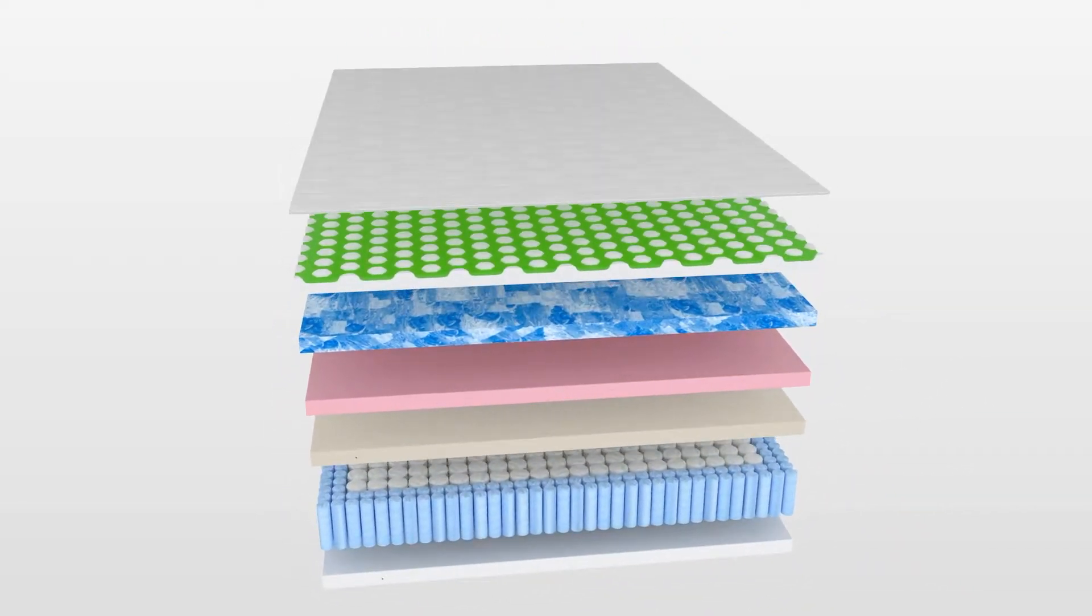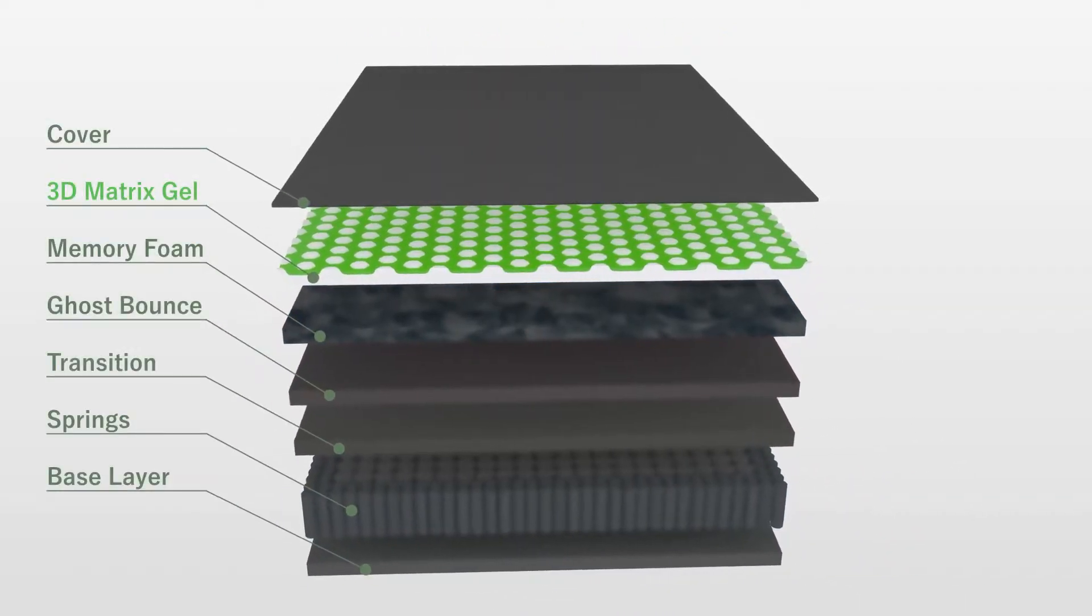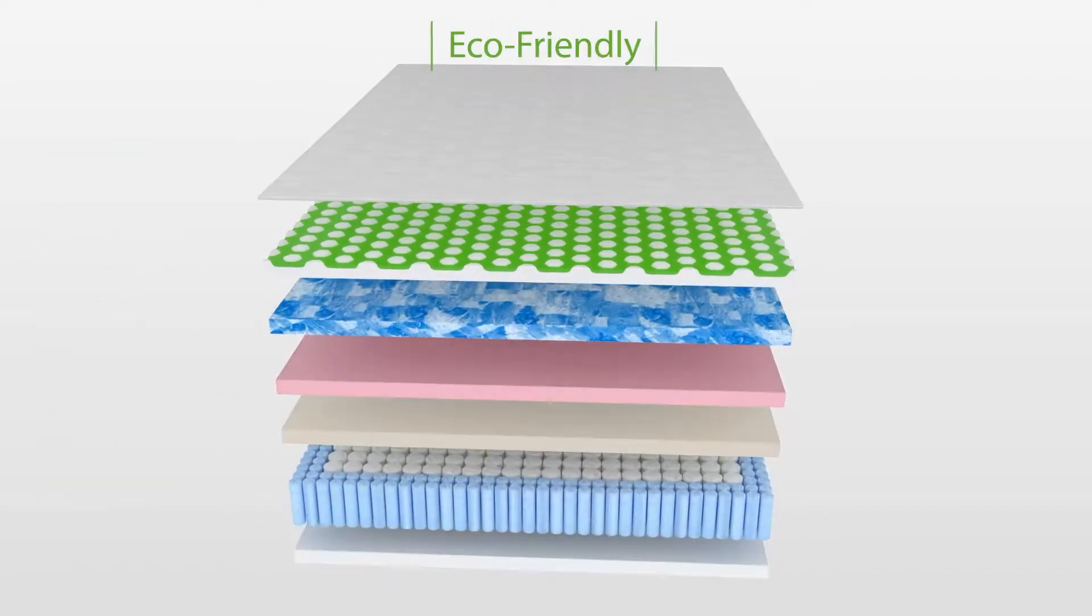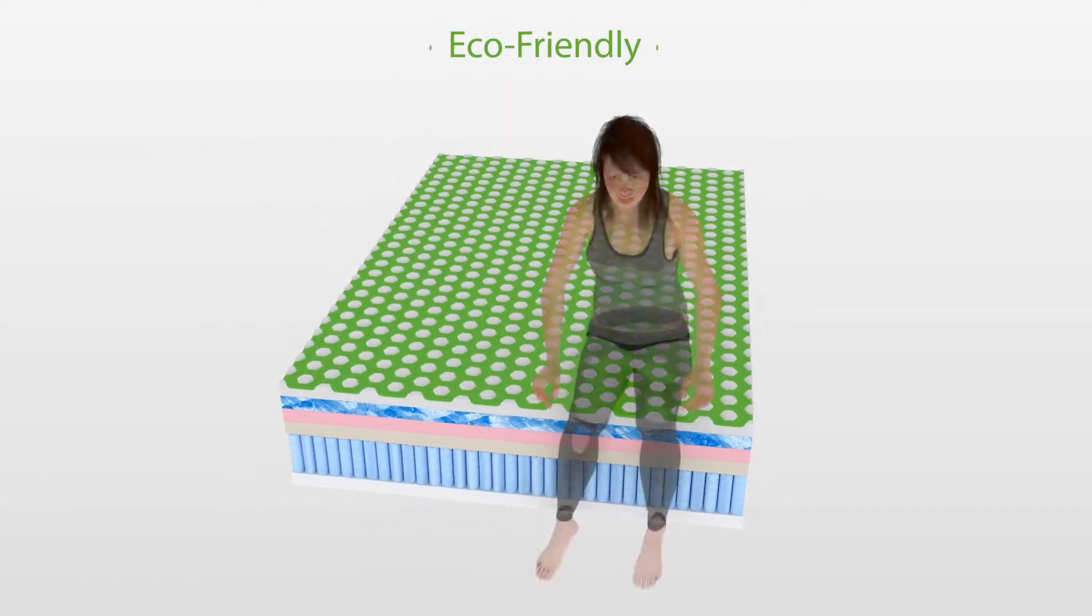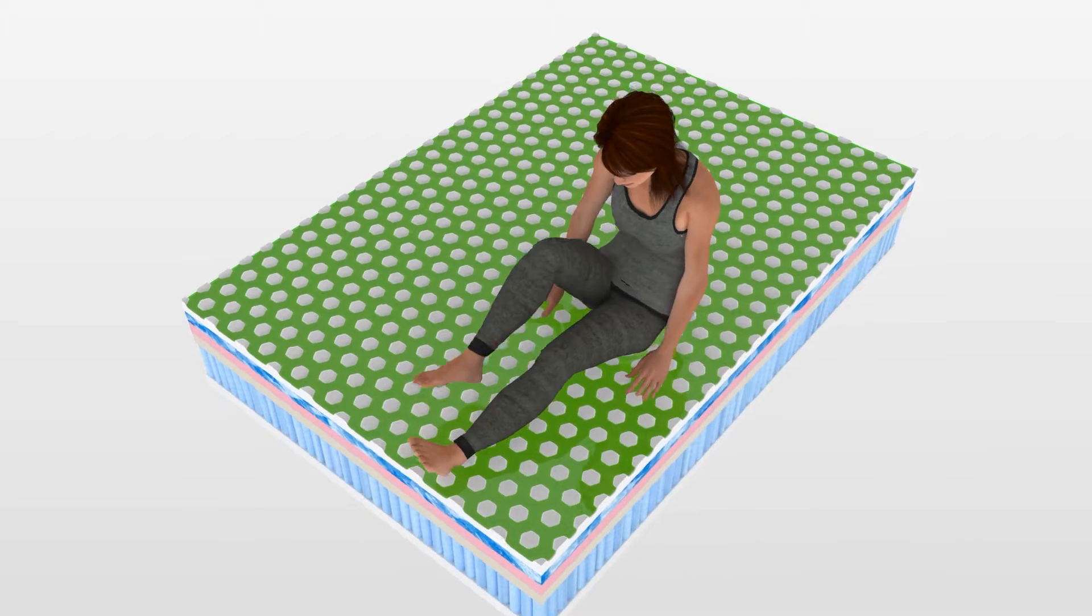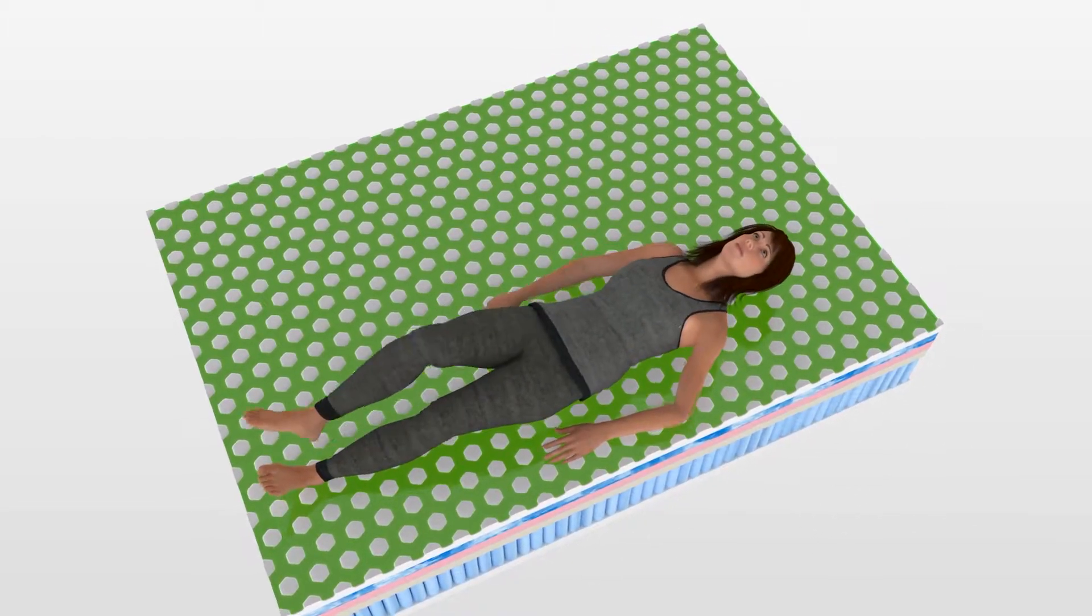The GhostBed 3D Matrix comfort layer is a three-dimensional gel polymer which is soy-based and eco-friendly. When you go to sleep, your individual body's desired temperature set point goes down.